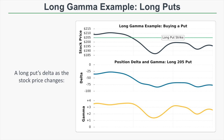Now let's look at a long put example. A long put has negative delta — starting around negative 37.5 — and positive gamma. As the stock price decreases, we subtract gamma from the delta, making the position delta more negative. As the stock price increases, we add gamma to the delta, bringing it closer to zero. We can see the put's delta starts around negative 37.5 and gets to around negative 80 as the stock price decreases.